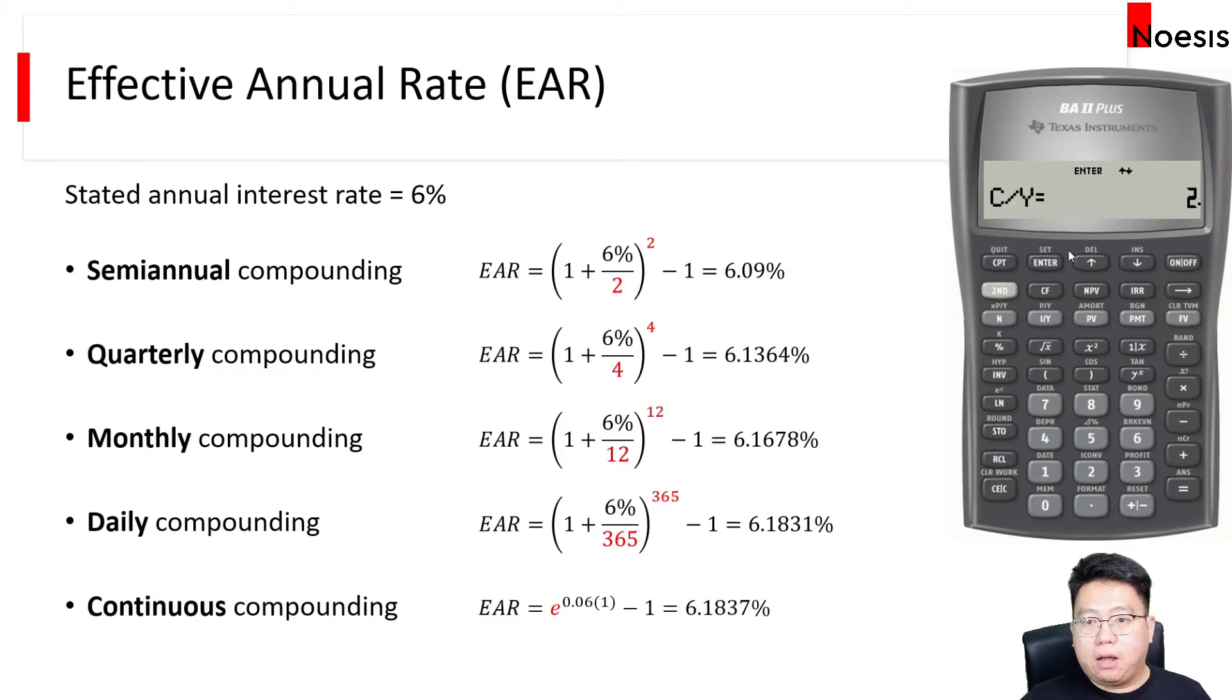For quarterly compounding, we'll change the compounding frequency to 4, and then move up and press Compute, so the EAR will be 6.1364%.